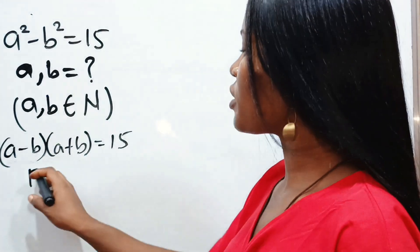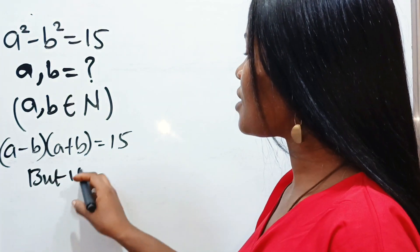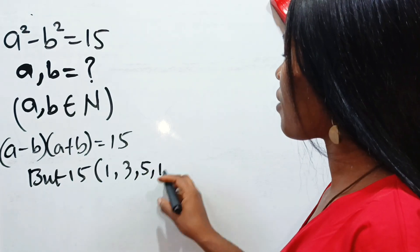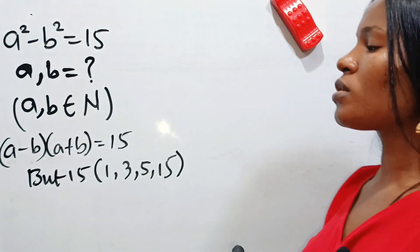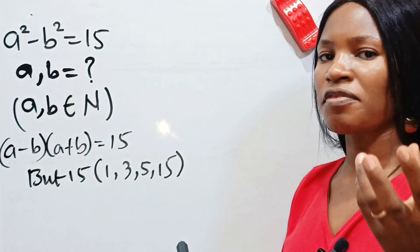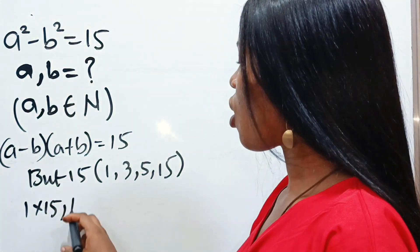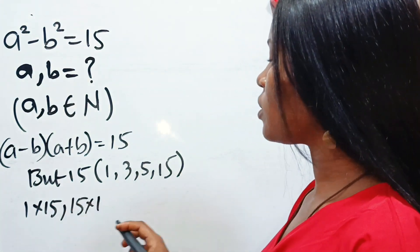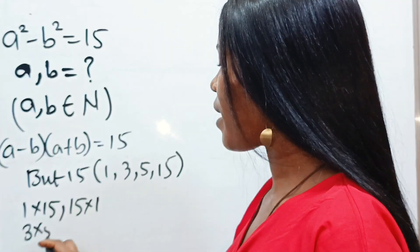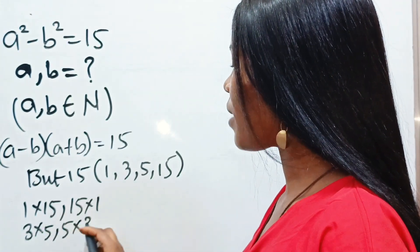But 15 has these factors: 1, 3, 5, and 15. So these are the possibilities of getting 15. That is 1 multiplied by 15 or 15 multiplied by 1, 3 multiplied by 5, or 5 multiplied by 3.